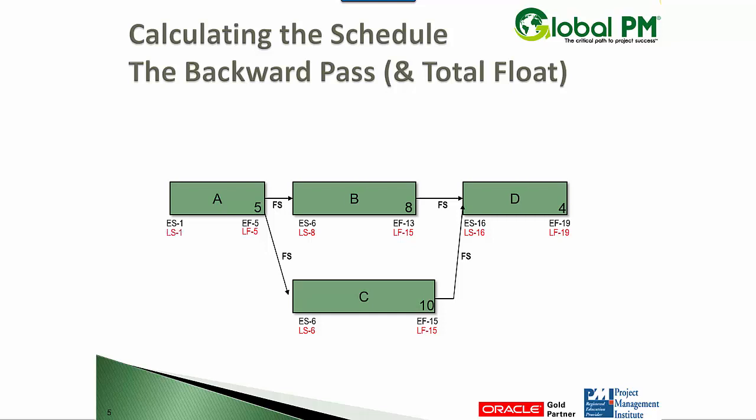So how do we calculate float? It's the difference between the late dates and the early dates. If I look at D, can I say late finish minus early finish or late start minus early start? Those would both yield zero. C would also yield zero. A would yield total float of zero. And B, as we see, has two days of float. In other words, the total float of activity B is two.